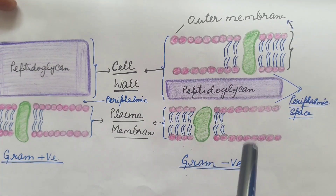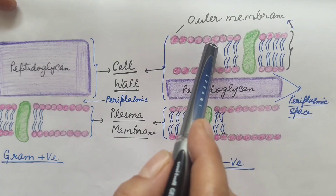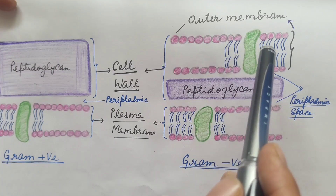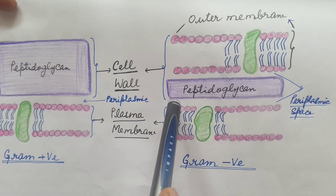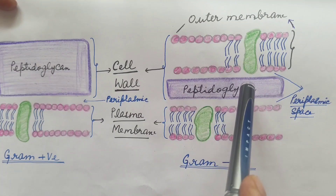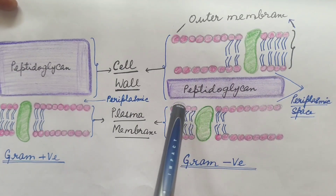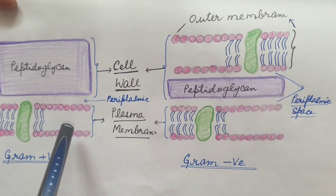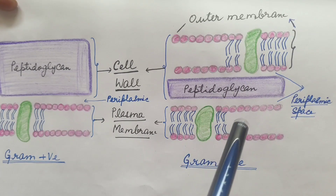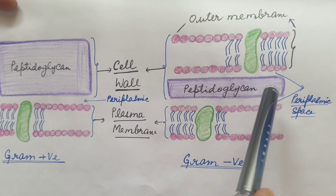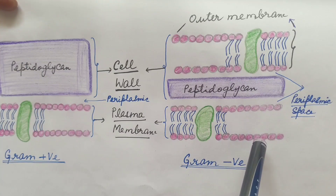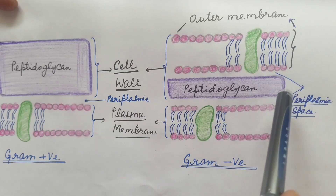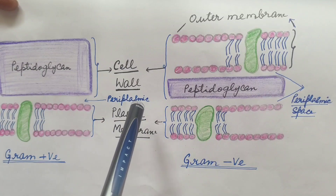In gram negative bacteria, the cell wall is composed of two layers: the outer membrane made up of lipopolysaccharide and lipoprotein, and the inner layer which is a thin layer of peptidoglycan. Below this, the plasma membrane is present, which is the same as in gram positive bacteria. The space between the outer membrane, the peptidoglycan layer, and the plasma membrane is known as periplasmic space. The periplasmic space is greater in gram negative bacteria compared to gram positive bacteria.